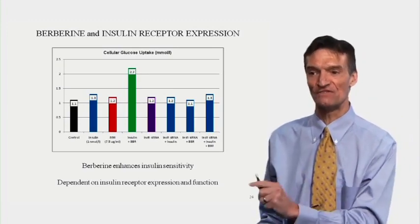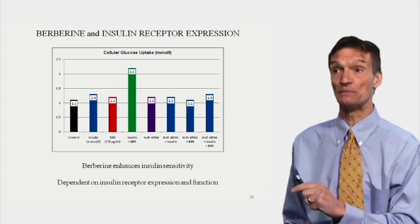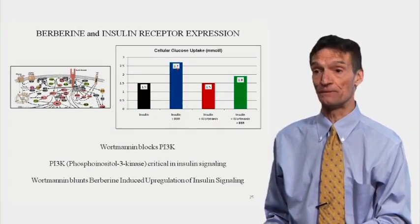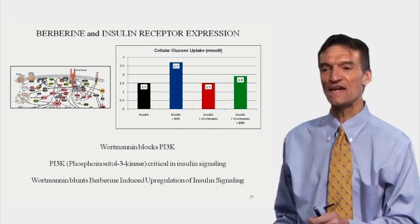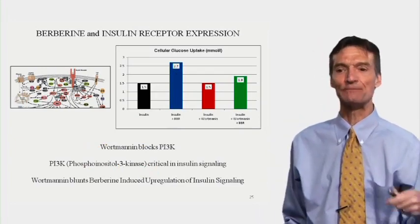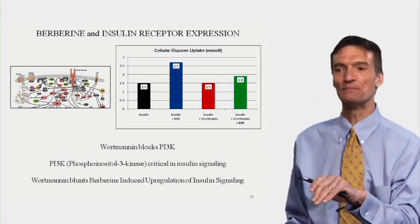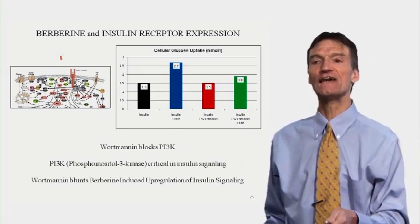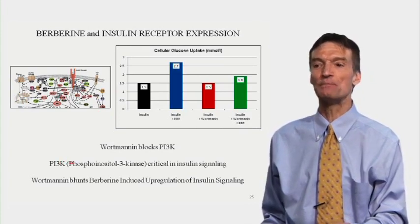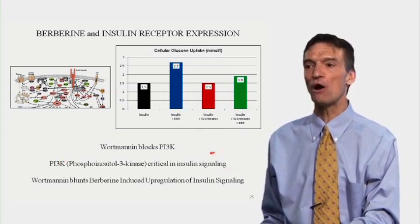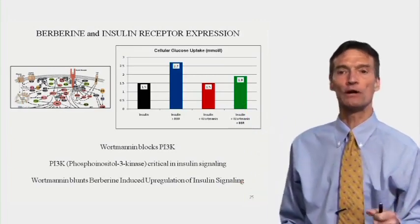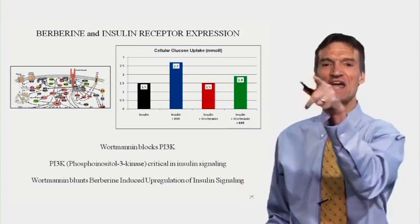Berberine will enhance insulin sensitivity, but we need insulin receptors for berberine to be effective. Cellular glucose uptake rises in response to insulin and berberine. Wortmannin blocks PI3K — phosphoinositide-3-kinase, sometimes also called AKT. PI3K-AKT is downstream in the insulin signaling pathway: insulin ligates its receptor, tyrosine-phosphorylates insulin receptor substrate 1, which activates PI3K — important insulin signaling. If we knock this out, berberine does not work. Wortmannin blocks berberine-induced upregulation of insulin signaling. For berberine to work, we need insulin receptors and an intact downstream pathway.